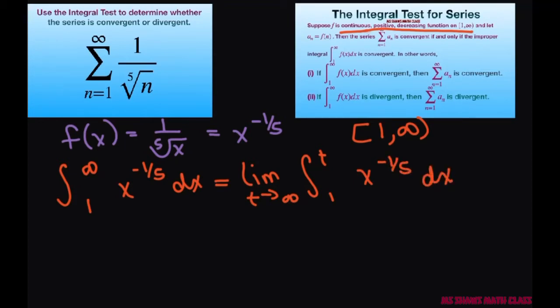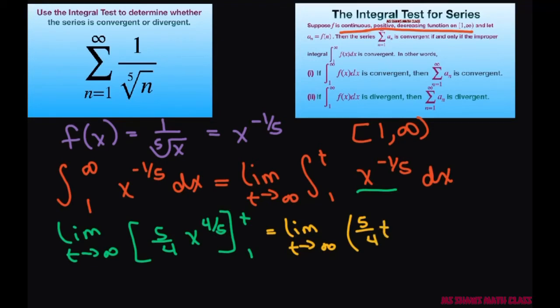So let's go ahead and integrate this. We're going to get the limit as t approaches infinity. And when you integrate this, you're going to get 5/4 x to the 4/5 power from 1 to t, which equals the limit as t approaches infinity of, and we substitute in the t first, so 5/4 t to the 4/5 power minus 5 divided by 4.